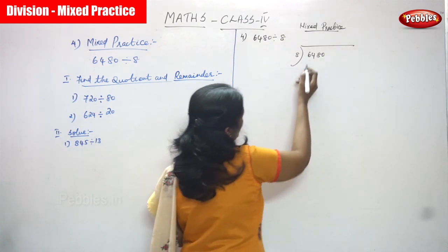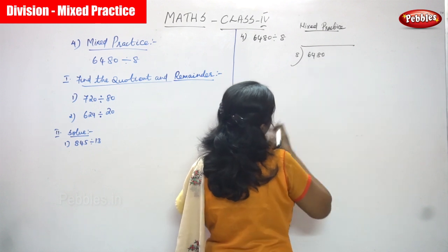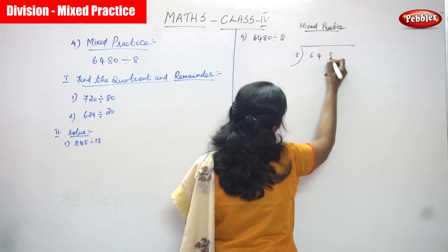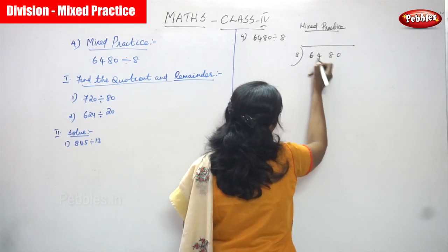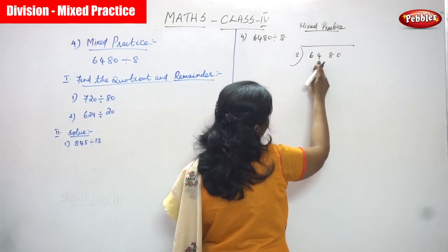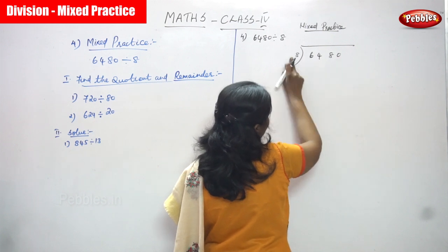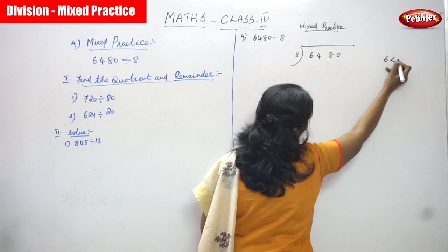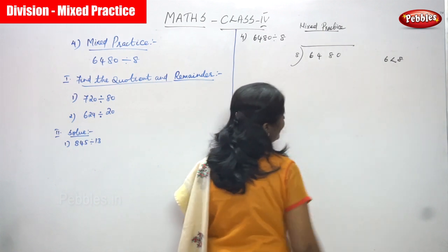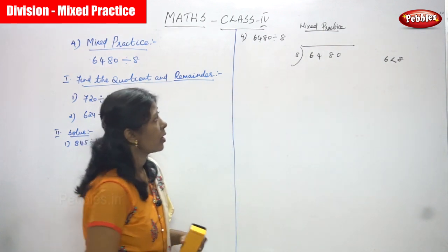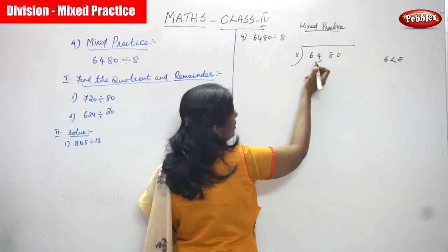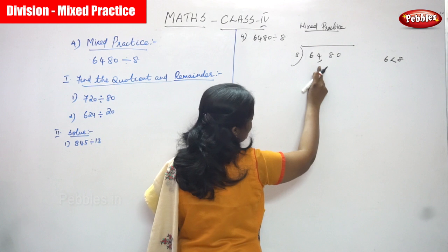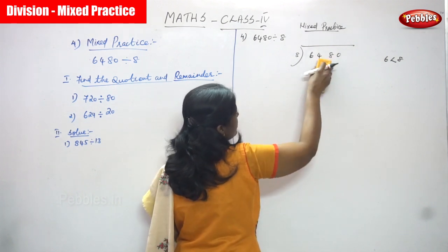First you have to compare. 6480 — the one stands at hundreds place. It is a four-digit number divided by a single digit. So now you compare 6 with 8. Since 6 is lesser than 8, you have to go to the next digit, which is 4 — that is the hundreds place value. So you take 64.